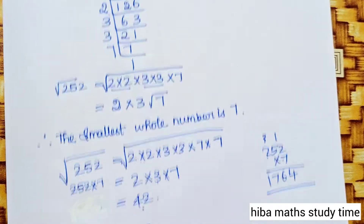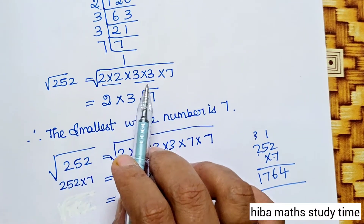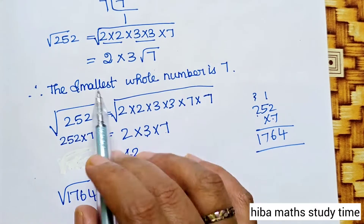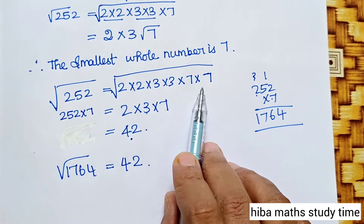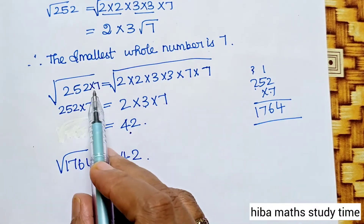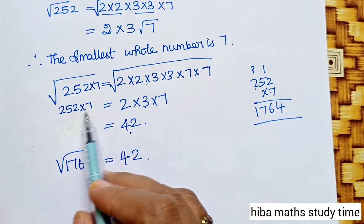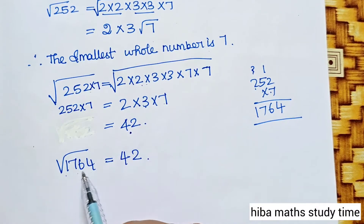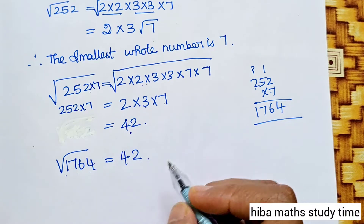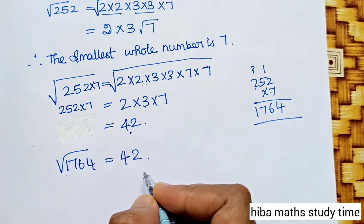To summarize the first subdivision: the smallest whole number is 7. We multiply 252 by 7 to get 1764, and the final answer is: root of 1764 is equal to 42.